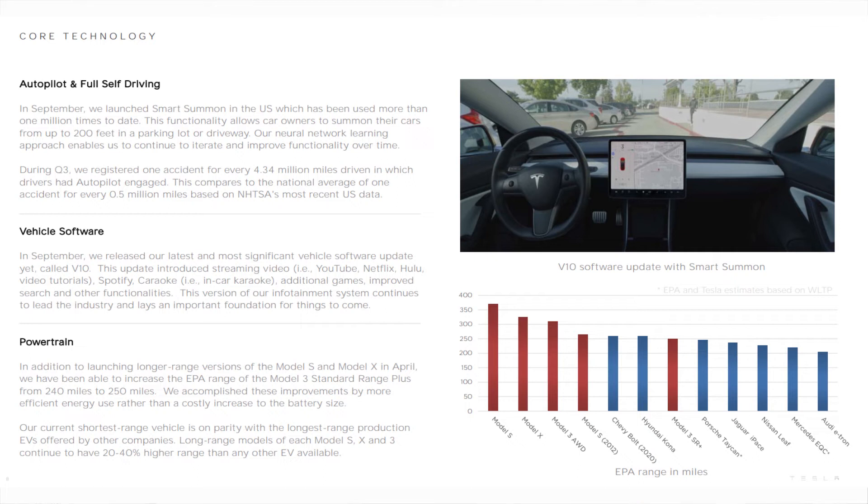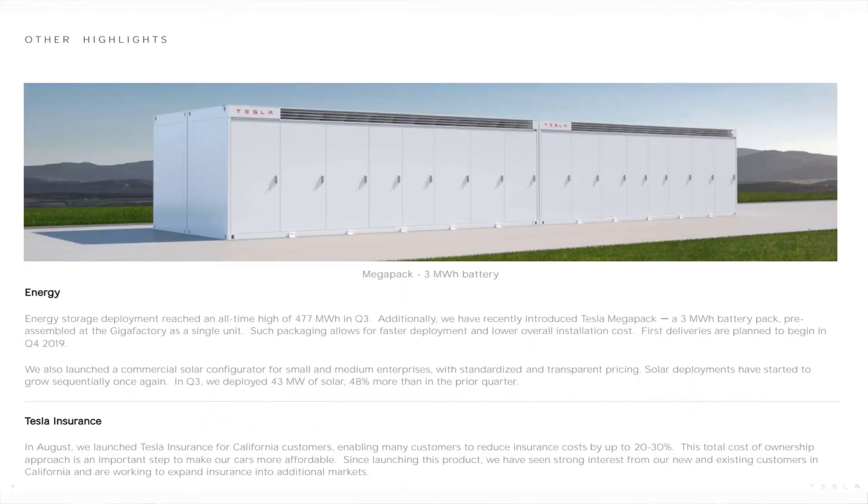It pretty much showed off how much the self-driving cars are not having accidents compared to everyone else. It said that there was one registered accident for every 4.34 billion miles which was fantastic. Also there are a few things about the vehicle software and also the powertrain about how much their batteries are better than everyone else's. We also had a bit about the Megapack which saw big massive increases this quarter which was fantastic and the Tesla insurance which won't be a massive thing for Tesla but still something that people are pretty bullish on.